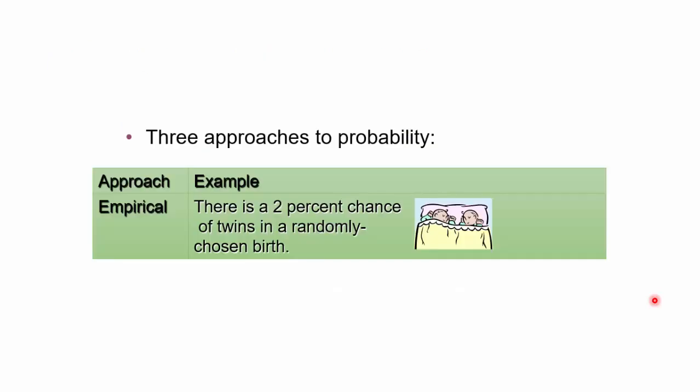A small summary again on the three different approaches. An empirical approach is based on data that has been collected over a period of time. So it has been found that there's a 2% chance that somebody would get a twin. This needs to be done over a few years to find out the probability of having twins. How many people had twins of the total number of births that happened?